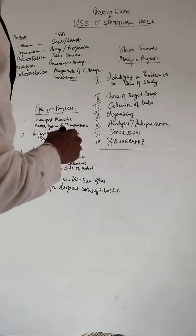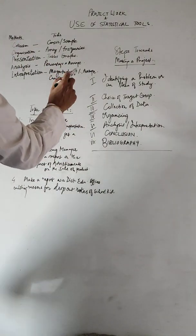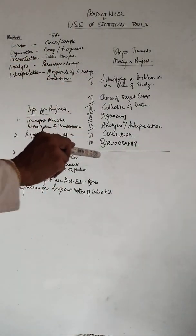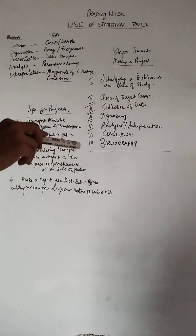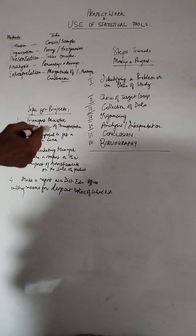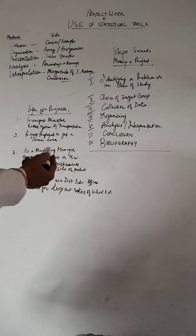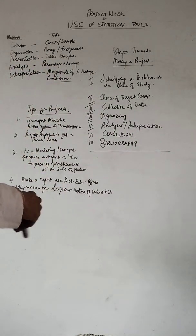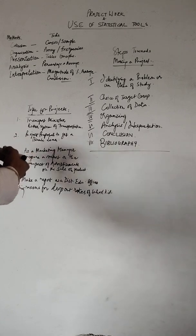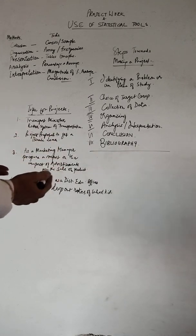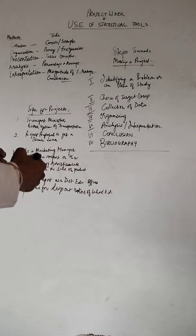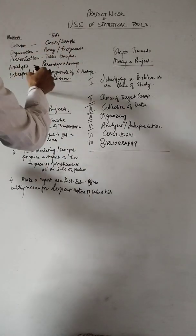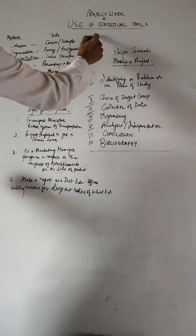For analysis of data — covered in unit three — we talked about measures of central tendency, measures of dispersion, correlation, and index numbers. Then interpretation means we take the magnitude of percentages or averages that we've calculated and come up with a conclusion. Having discussed these statistical tools, we'll now use them in our project work.